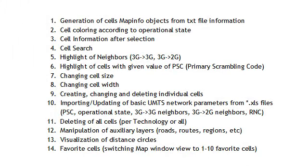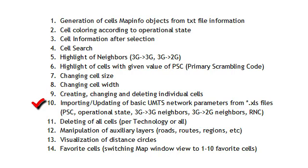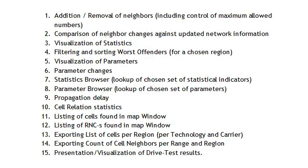The standard set of features includes generation of cells and mapping objects from text file information, cell coloring according to operational state, cell information after selection, cell search, highlight of neighbors, highlight of cells with a given value, changing of cell size, changing of cell width, creating, changing, and deleting individual cells, importing and updating of basic UMTS network parameters, deleting of all cells, manipulation of auxiliary layers, visualization of distance circles, and your favorite cells.